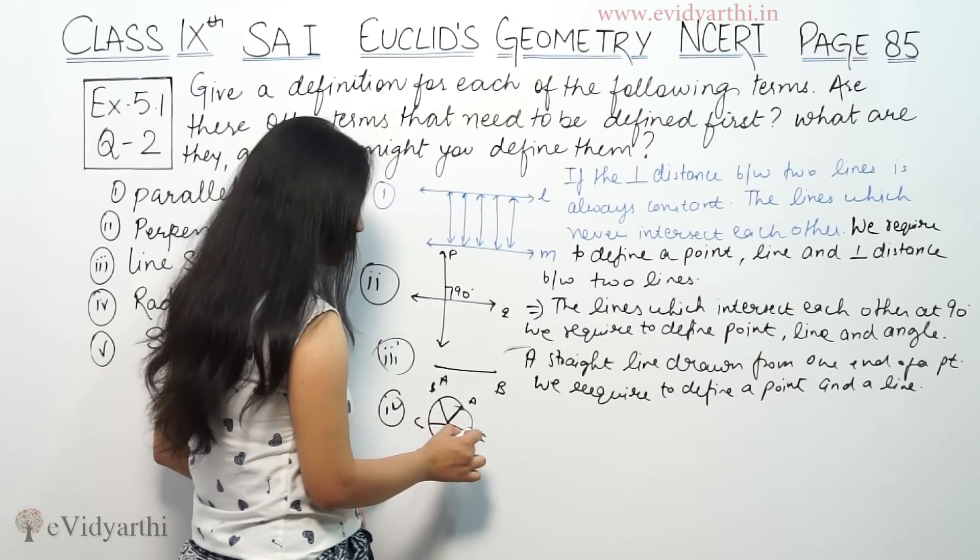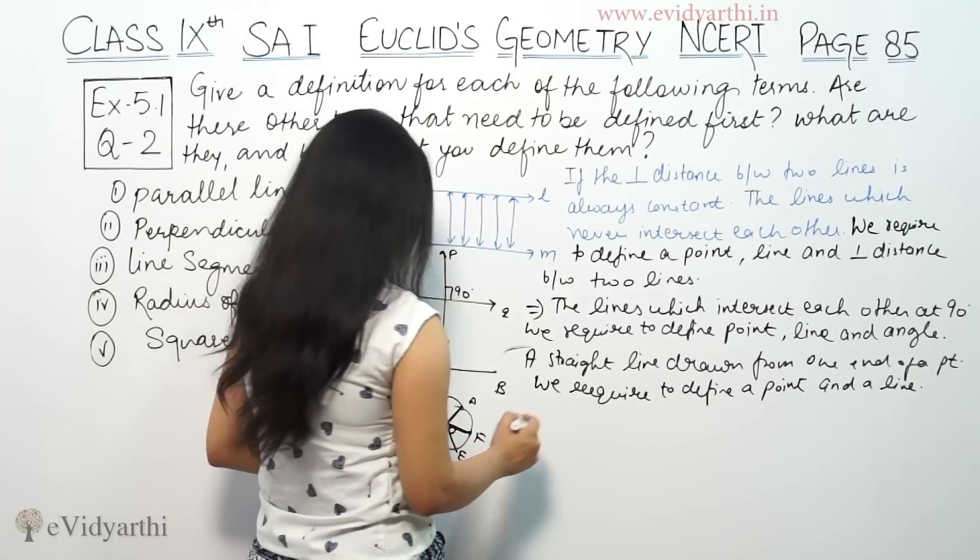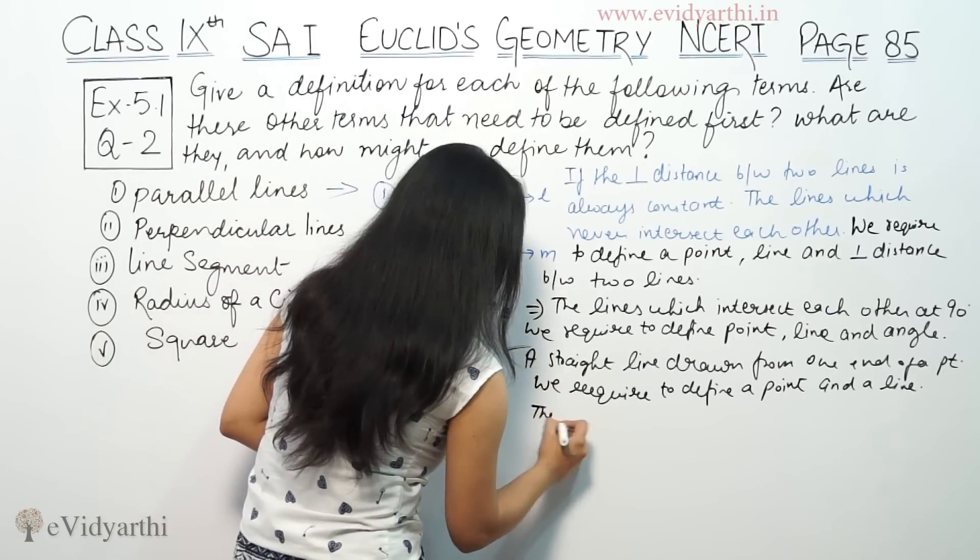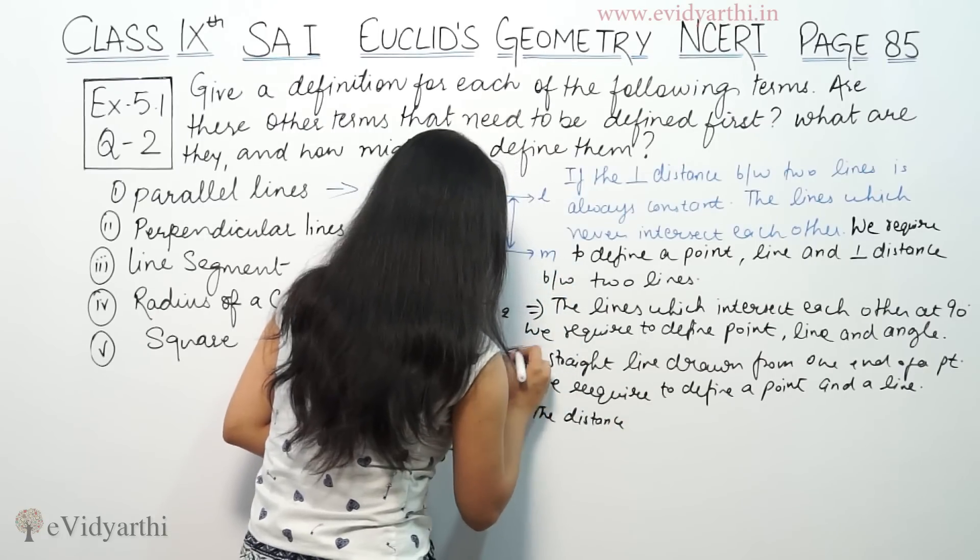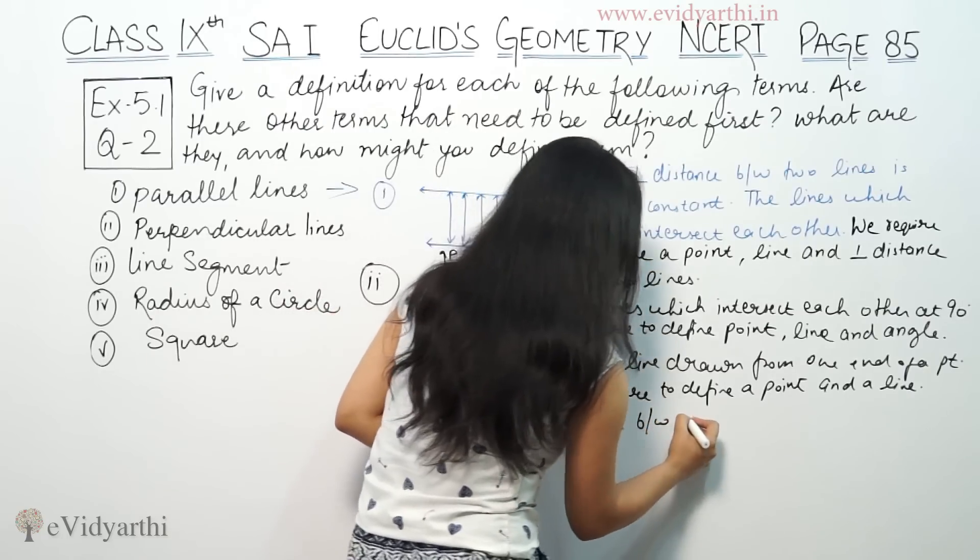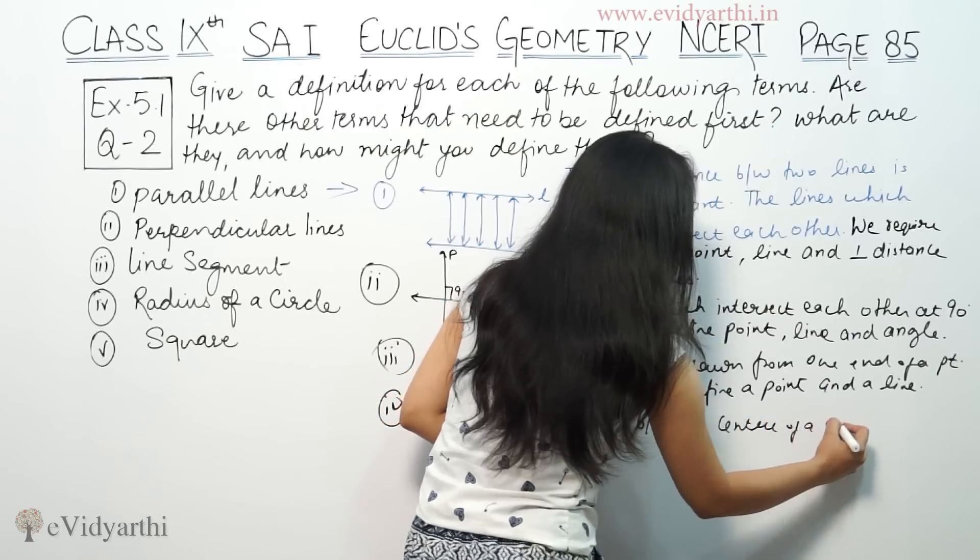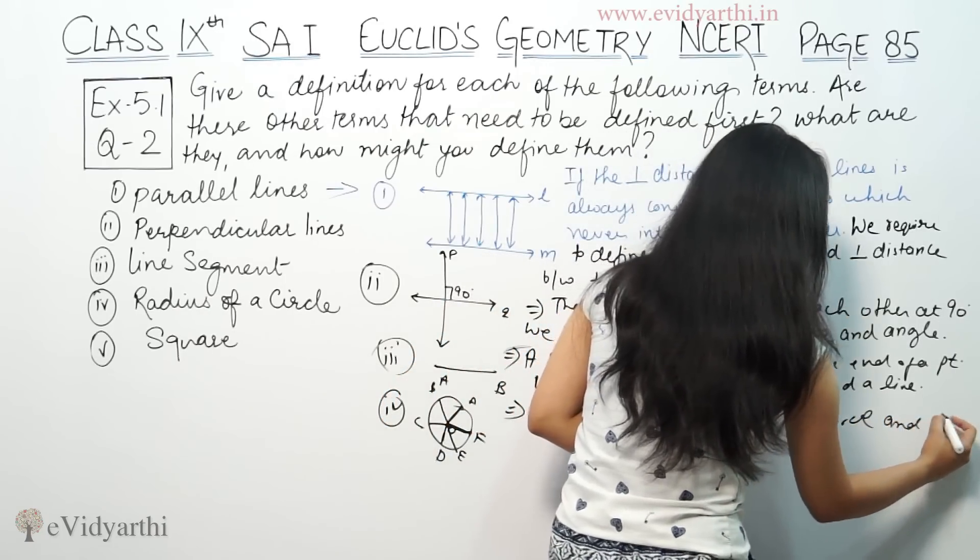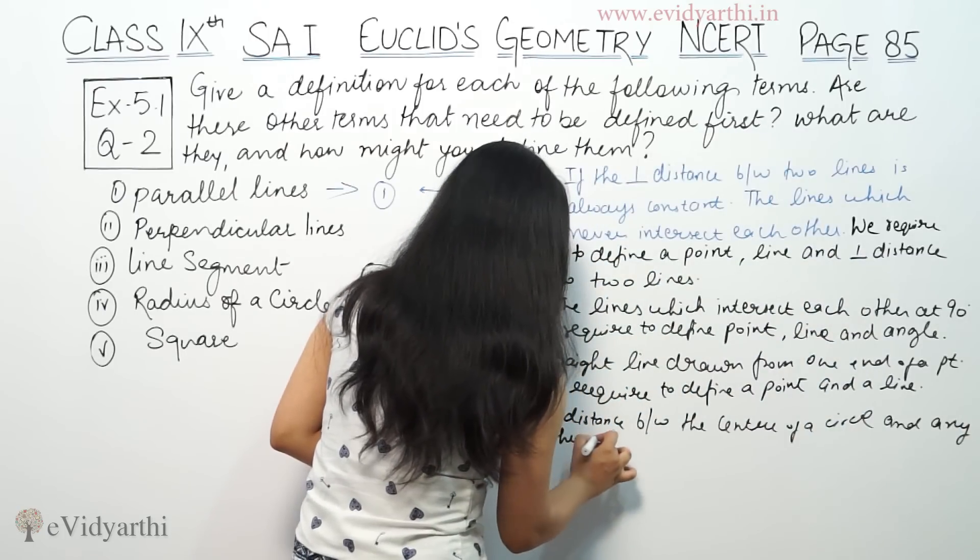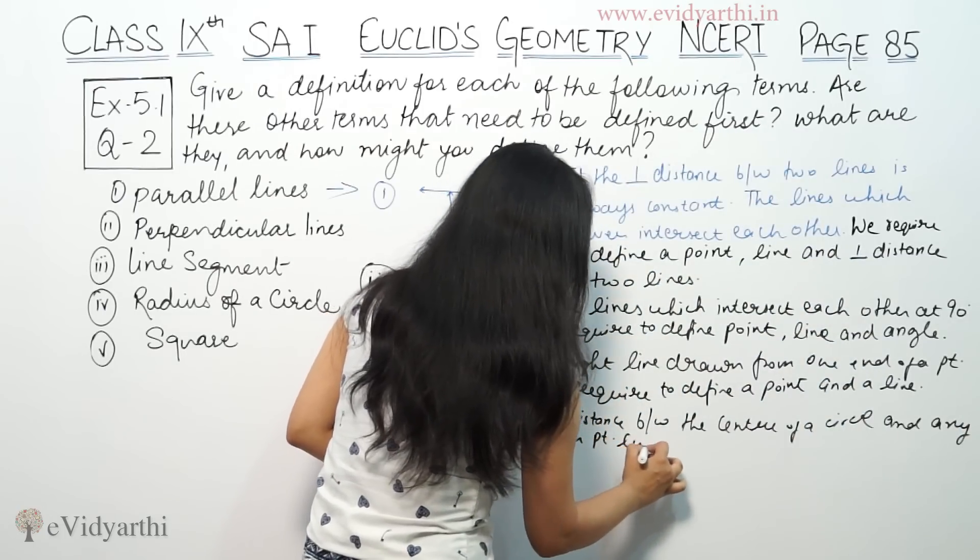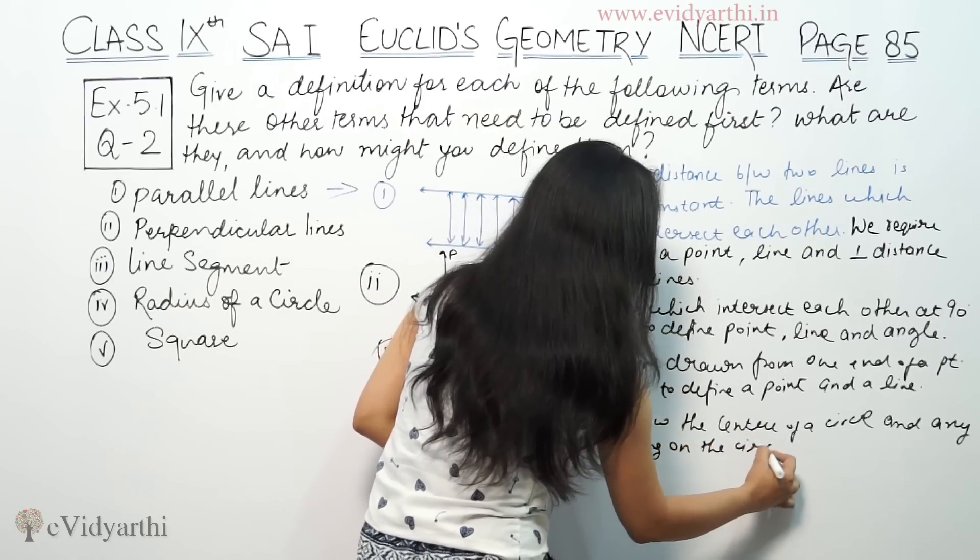That is radius. So the distance between the center of circle and any other point lying on the circle is called radius.